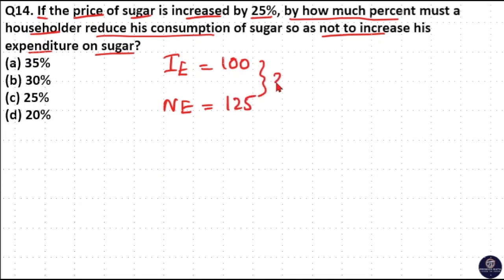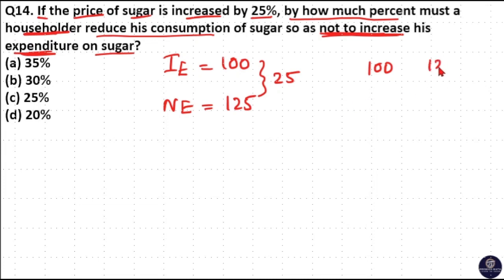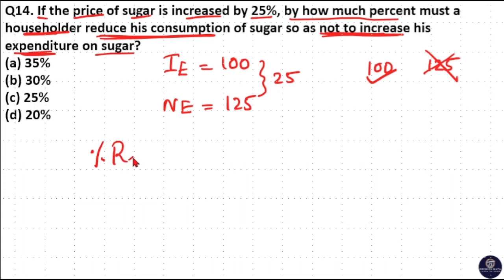The difference in expenditure is 25 rupees. The householder does not want to increase his expenditure on sugar — he wants to keep it at 100 rupees. The current price is 125 but he only wants to spend 100 rupees, so he needs to reduce his consumption in order to keep the expenditure at 100 rupees.